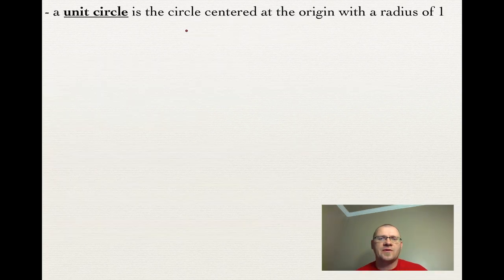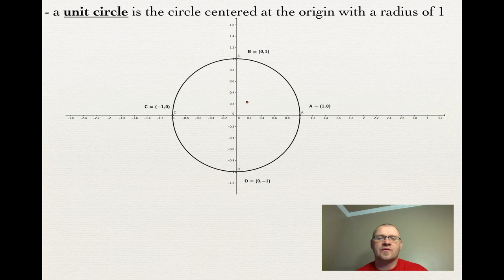The unit circle is the circle centered at the origin that has a radius of one. Here's our circle, here's the origin, and it doesn't matter where you go around this circle — it has a radius of one. So this point here, point A, is (1, 0), point B is (0, 1), etc. A radius of one all the way around this circle.